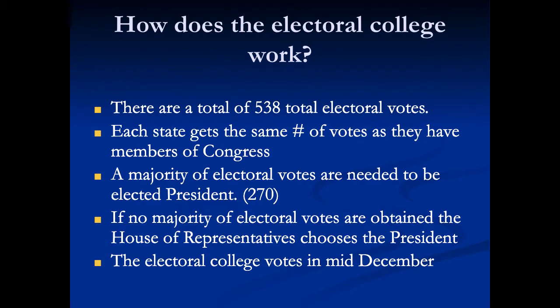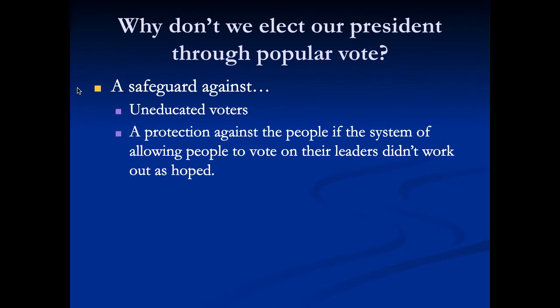The electoral college doesn't vote in November. When we watch election night returns and they say the president won, the electors haven't formally voted yet — we just assume they will vote for him. We don't technically know who's president until the electors formalize it in mid-December. We just know the electors will vote the way the people voted, because they historically have in the United States.